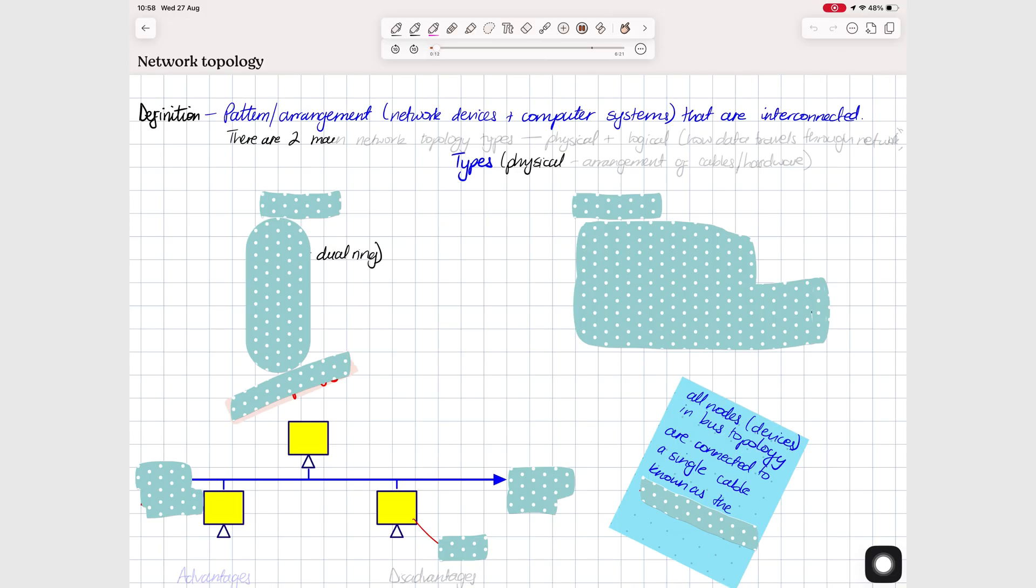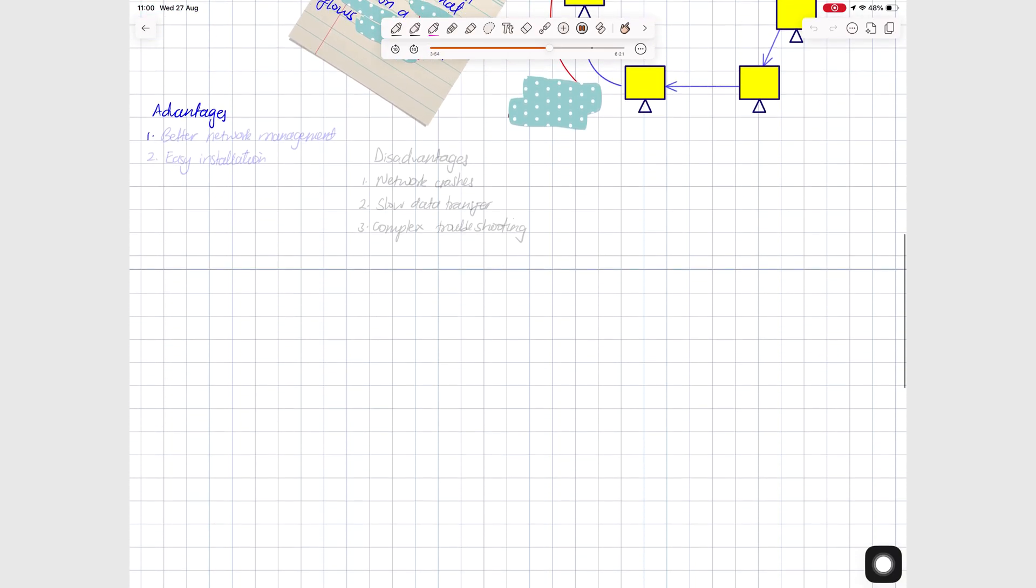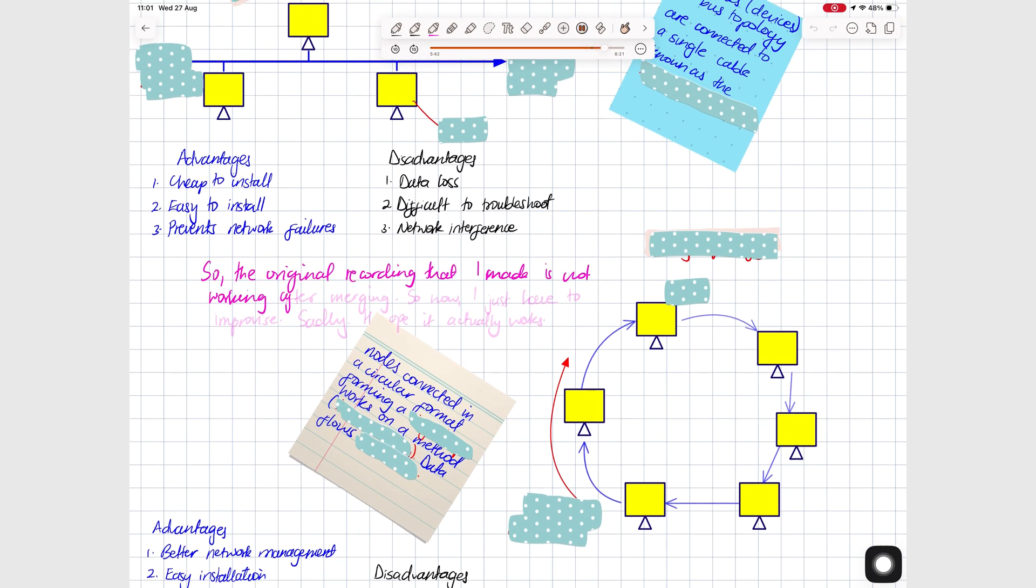Now, if there's one feature that defines Notability, it's the audio recording. And this is where the app truly shines. No handwriting app comes close to what Notability offers. You can sync handwritten and typed notes perfectly with your recordings, and it does this with pixel accuracy for your handwriting. Something we've not seen anywhere else. In fact, we scored audio recording out of 15 in our database, and Notability gets a 12.5.